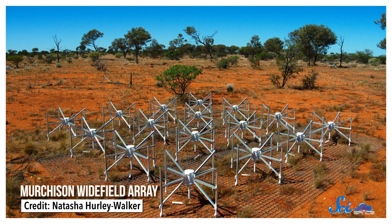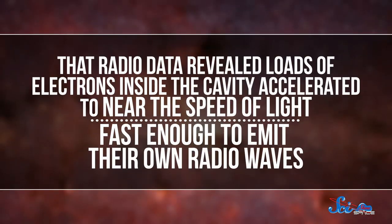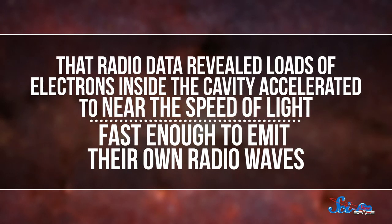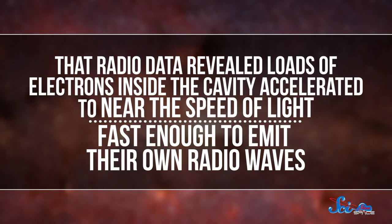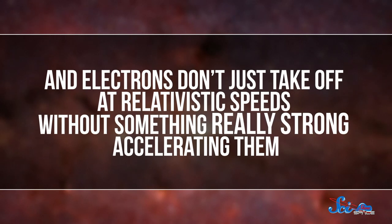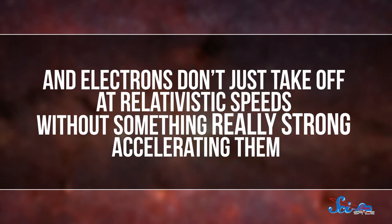But unlike the first team, they also looked at radio data from the Murchison Widefield Array in Australia and from the giant Meterwave radio telescope in India. And that offered them a new clue. That radio data revealed loads of electrons inside the cavity accelerated to near the speed of light, fast enough to emit their own radio waves. And electrons don't just take off at relativistic speeds without something really strong accelerating them.